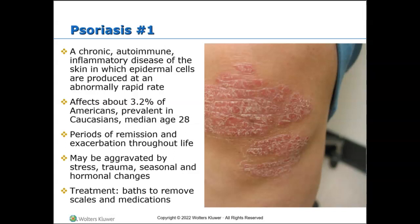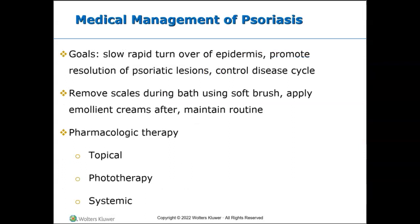Things that may aggravate and bring on exacerbations include stress, trauma, seasonal changes, and hormones. Treatment includes instructing patients to take baths to remove scales, oral medications like immunosuppressants, steroids, and anti-inflammatory medications, light therapy, stress management, and topical ointments. The goal is to slow the rapid turnover of the epidermis, promote resolution of psoriatic lesions, and control the disease cycle to prevent as many exacerbations as possible. Remove scales during bathing using a soft brush, apply emollient creams after, and maintain a routine.